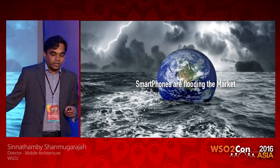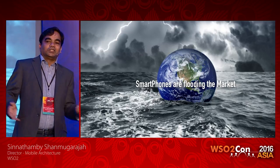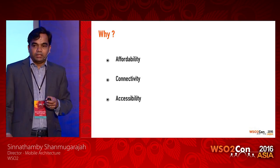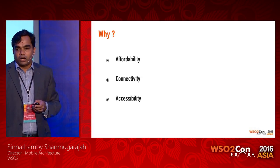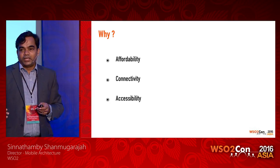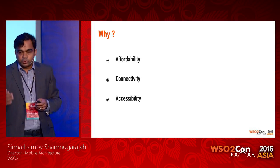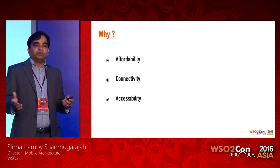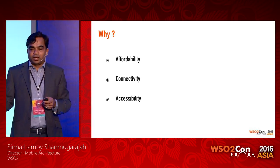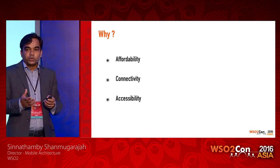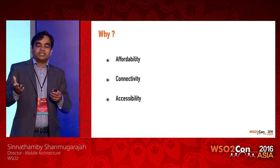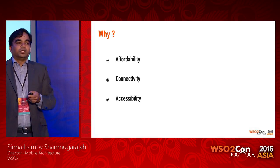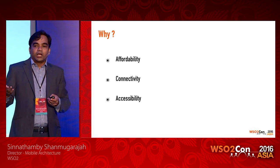You know about smartphone penetration — it's flooding the market. And if you want to see why, it's because of the affordability. Now the prices have gone down, so affordability is there for end users to buy mobile phones. The second reason is connectivity — everywhere you go, you have connectivity, 4G to Wi-Fi, everything is there. The third one is accessibility — you can use your device, and it's basically as powerful as a computer, so you can access any content.